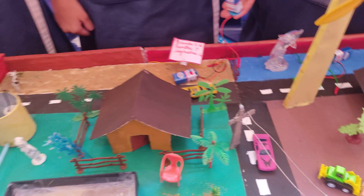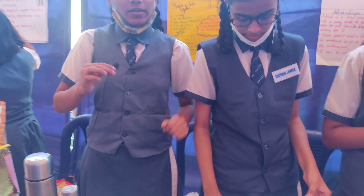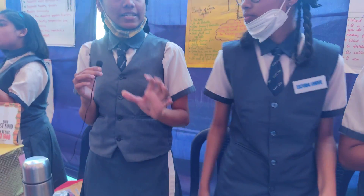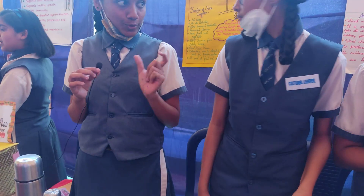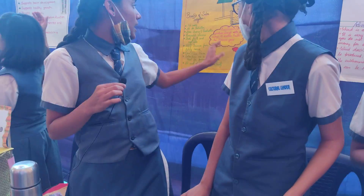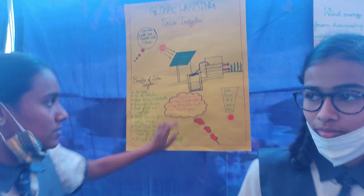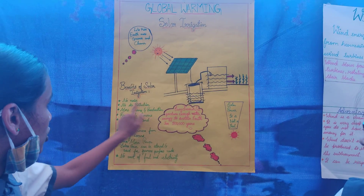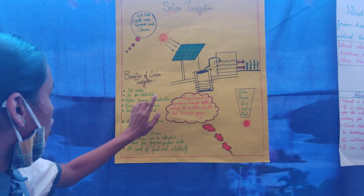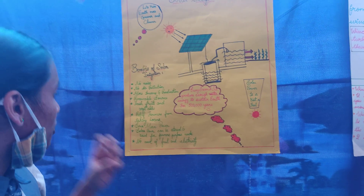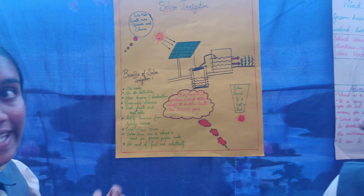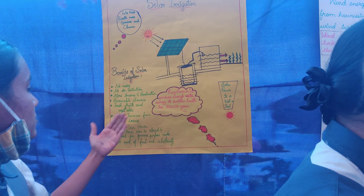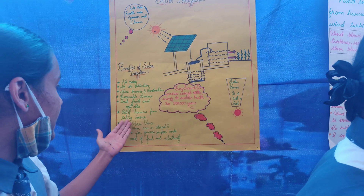You will be very surprised by knowing this fact: every second, the sun produces enough energy to sustain the earth for 500,000 years. These are the benefits: no noise, no air pollution, more income, more production. We will get fresh fruits and vegetables, and it gives relief from taking loans.